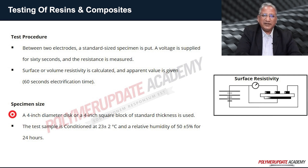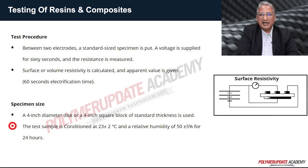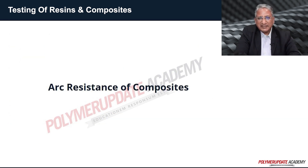Generally, defined specimen sizes are used — a four-inch diameter disc or four-inch square block of standard thickness. It is important to condition the test sample before carrying out the test. It is conditioned at 23 degrees centigrade at a relative humidity of 50 percent for 24 hours.